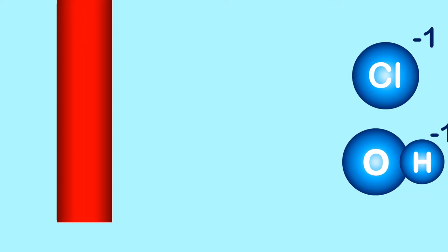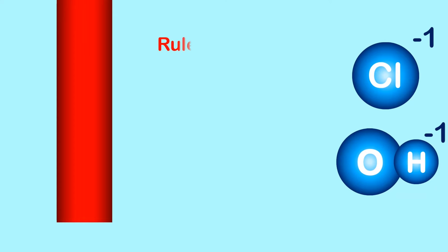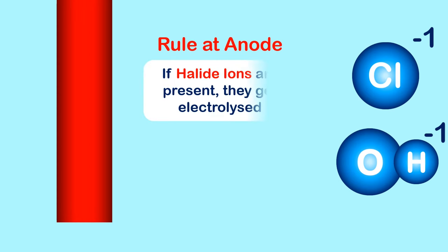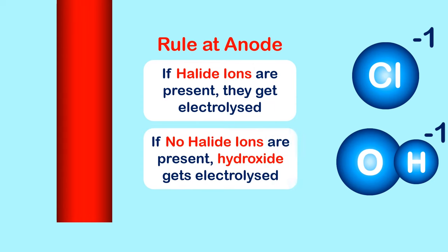So now, what happens at the anode? Well, we have our negative chloride and hydroxide ions, and again only one of them can be electrolyzed. At the anode, the rule is that if a halide or group 7 ion is present, then it gets electrolyzed, and if there isn't a halide ion present, then the hydroxide gets electrolyzed.